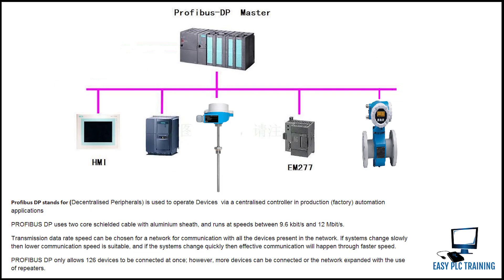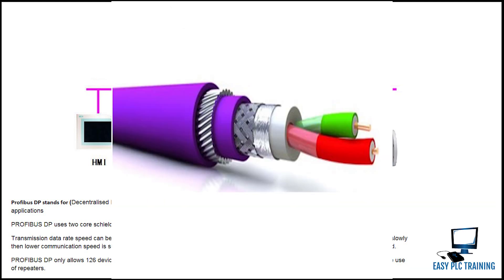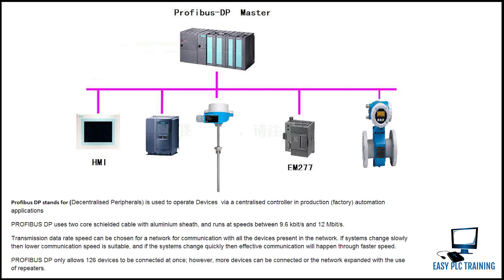There are two main variants of PROFIBUS. The first is PROFIBUS DP, which stands for Decentralized Peripherals. It is used to operate devices via a centralized controller in production, factory, and automation applications. PROFIBUS DP uses a two-core shielded cable with an aluminium sheath and runs at speeds between 9.6 kbps and 12 Mbps. The transmission data rate speed can be chosen for a network for communication with all devices present in the network.